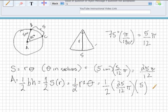So, if you multiply all this out, you'll see that we get 125 pi over 24.